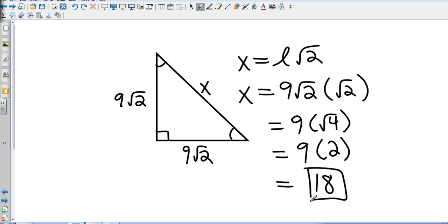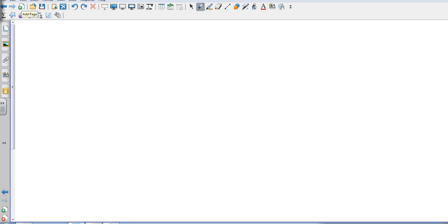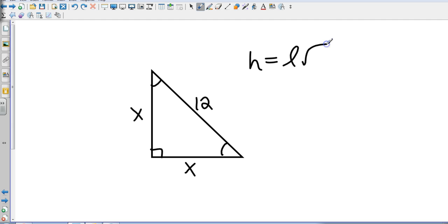So there's a couple 45-45-90 triangles. Let's look at one more example, and then we'll move on to the 30-60-90. Now I wanted to do one where it gave us the hypotenuse instead of the leg.